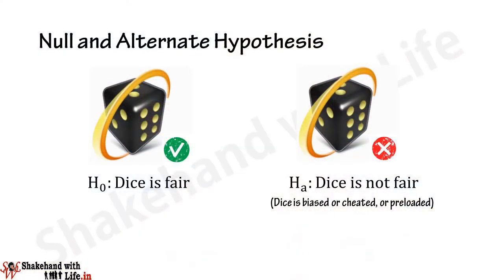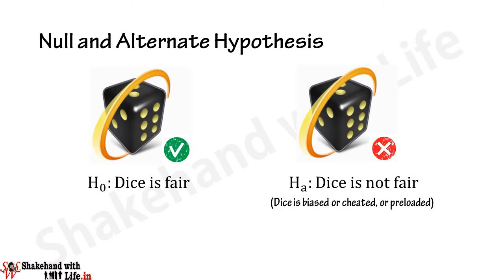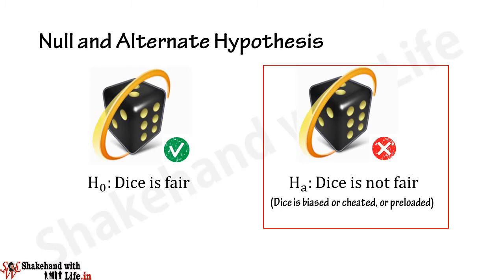The very first step to solve this problem is to state the null and alternative hypothesis. Here we have to conclude the dice is fair, so as a null hypothesis we consider the dice is fair and state it as H0: dice is fair. As an alternative hypothesis we consider the dice is not fair — it means the dice may be biased, cheated, or pre-loaded with some numbers — hence H1: dice is not fair.